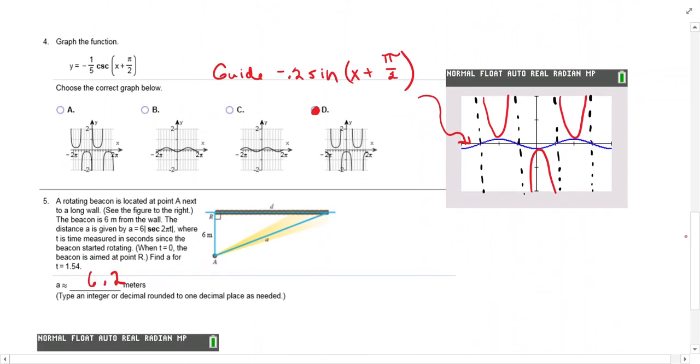Number four, same thing. This one, our guide function is sine of x plus pi over 2. And this one does go and straddles the y-axis. So you can tell that's it and that is not it. So you have to look at what yours is doing. And then we knew it wasn't this or this. So we chose D.